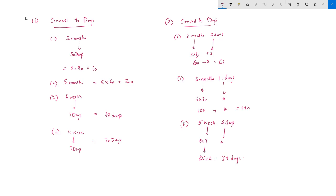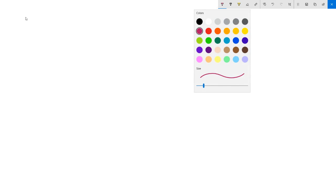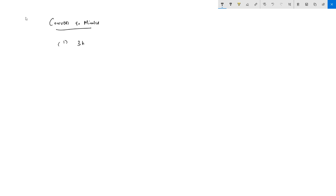Now the next type of problem is converting to minutes. For 3 hours: multiply by 60, giving 180 minutes. For 2 hours 10 minutes: 2 × 60 = 120, plus 10, that is 130 minutes.